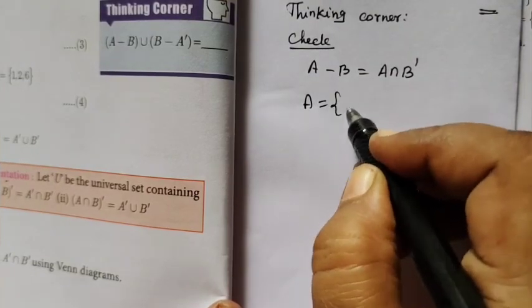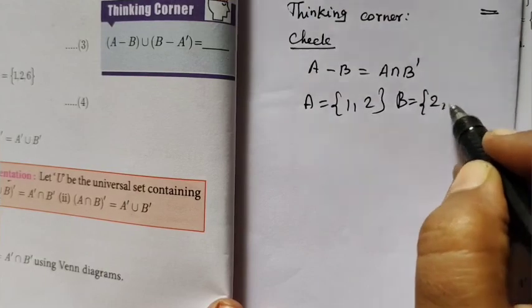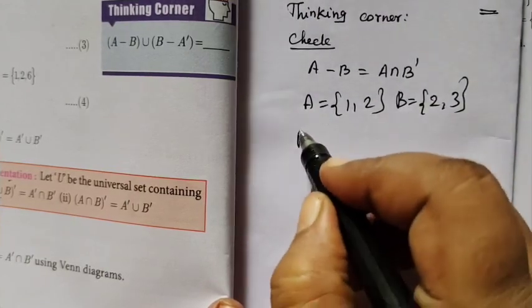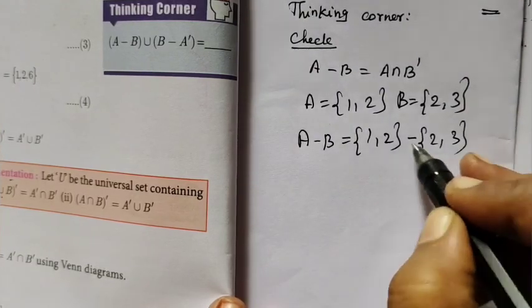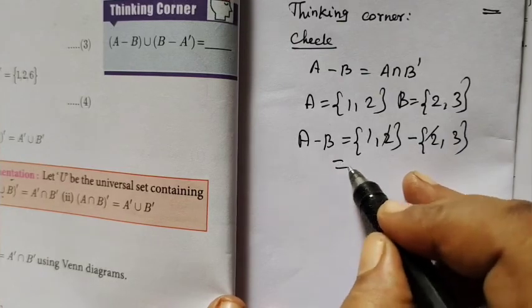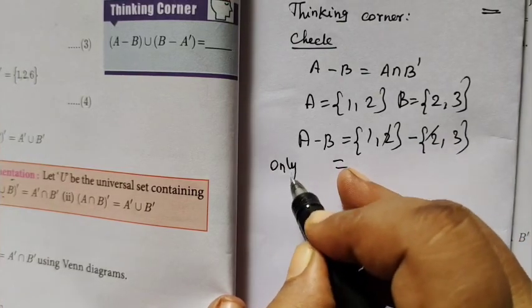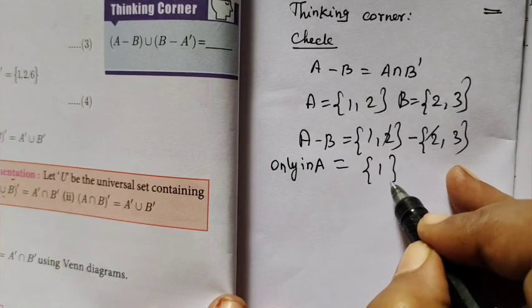So A equal to 1, 2. Then B equal to 2, 3. Find A difference B. If you can cancel it. Only in A combination of A. Only 1. So this is A difference. So this is 1.